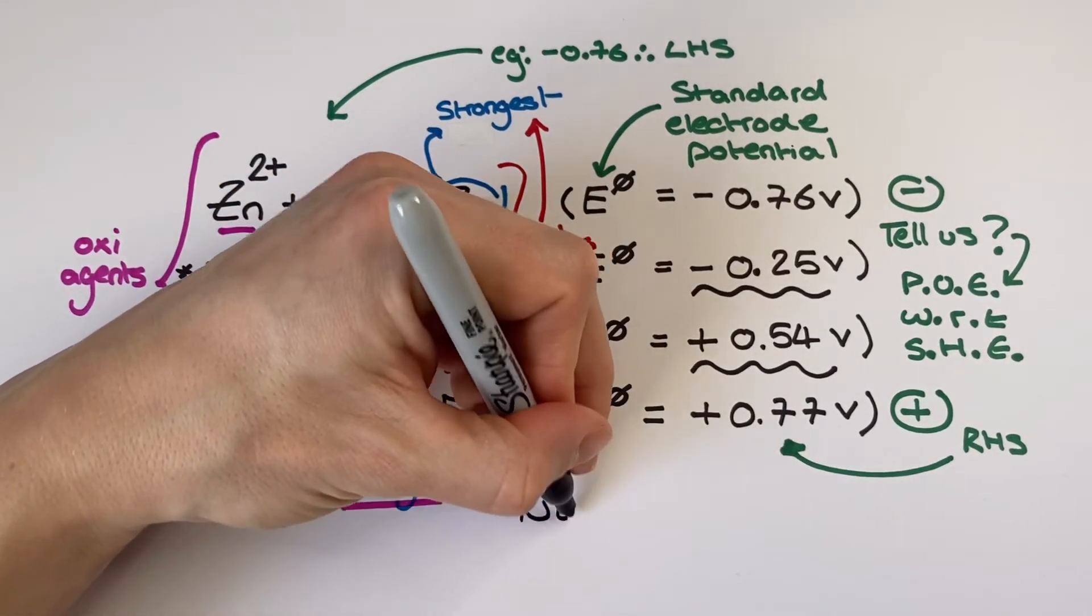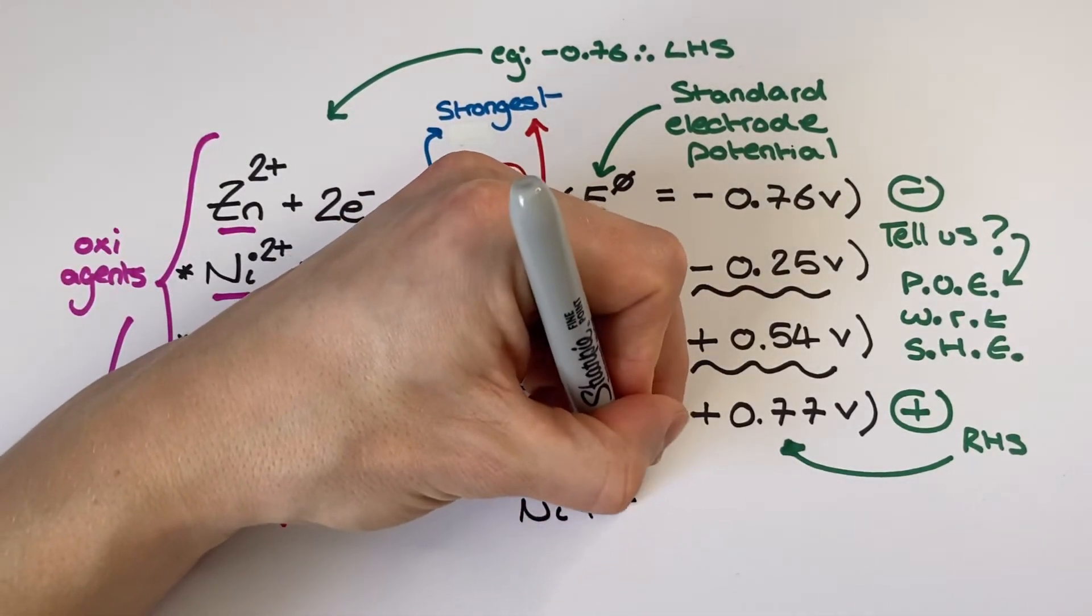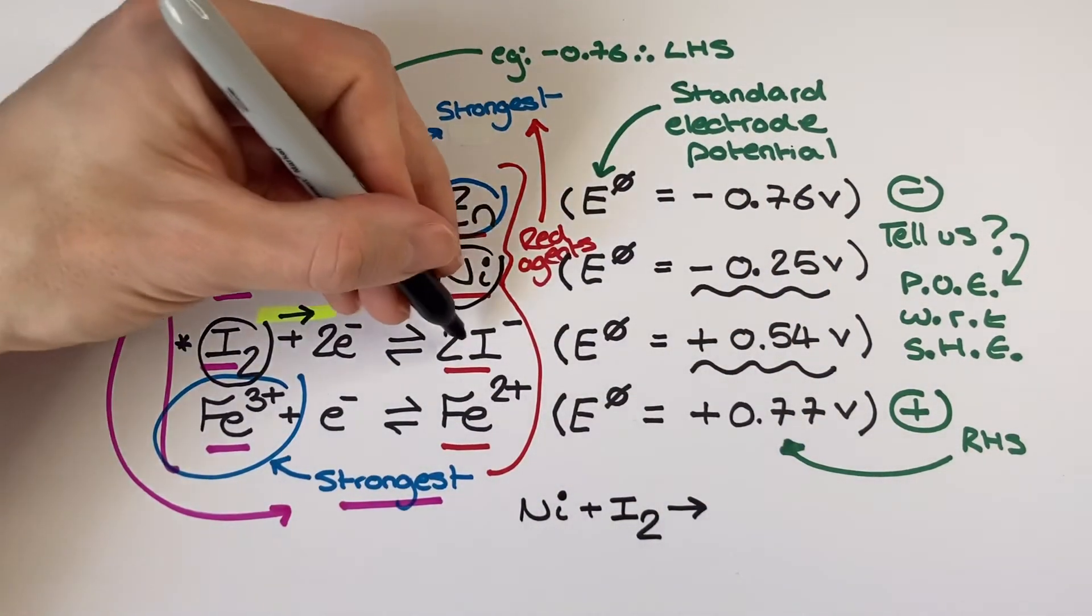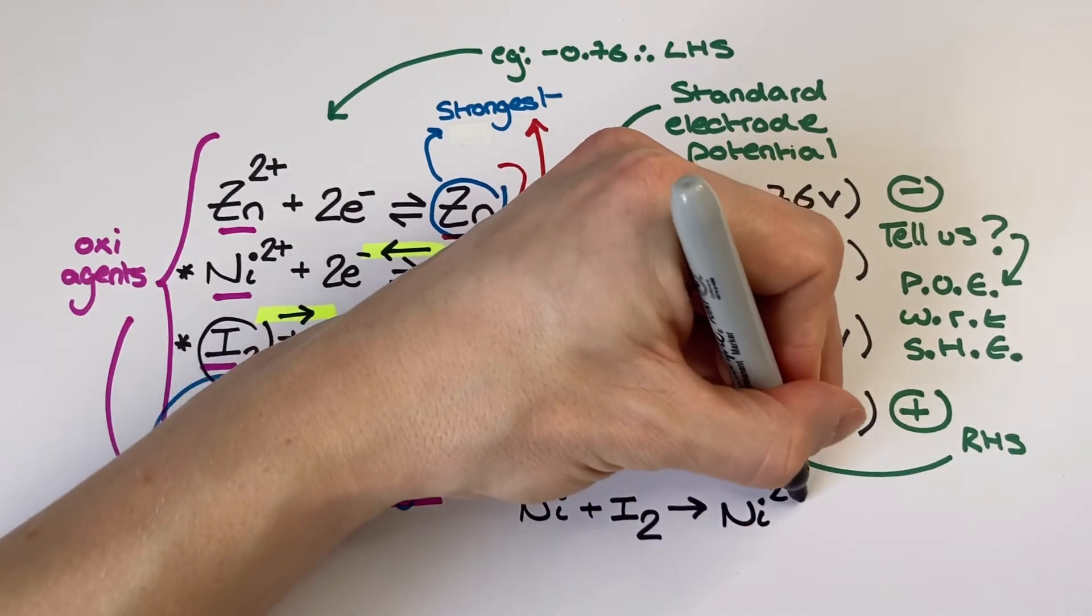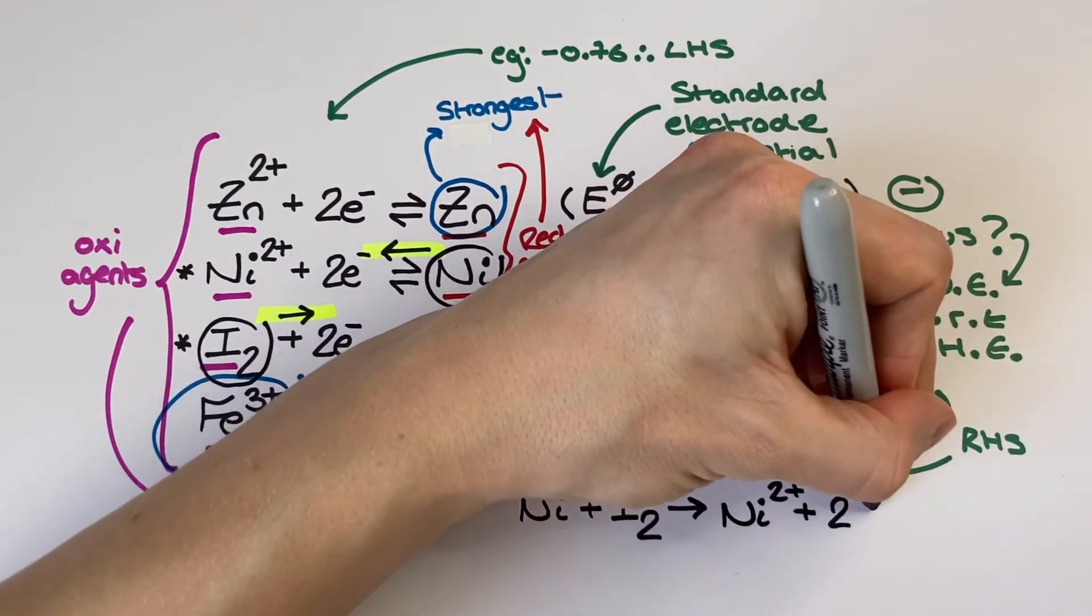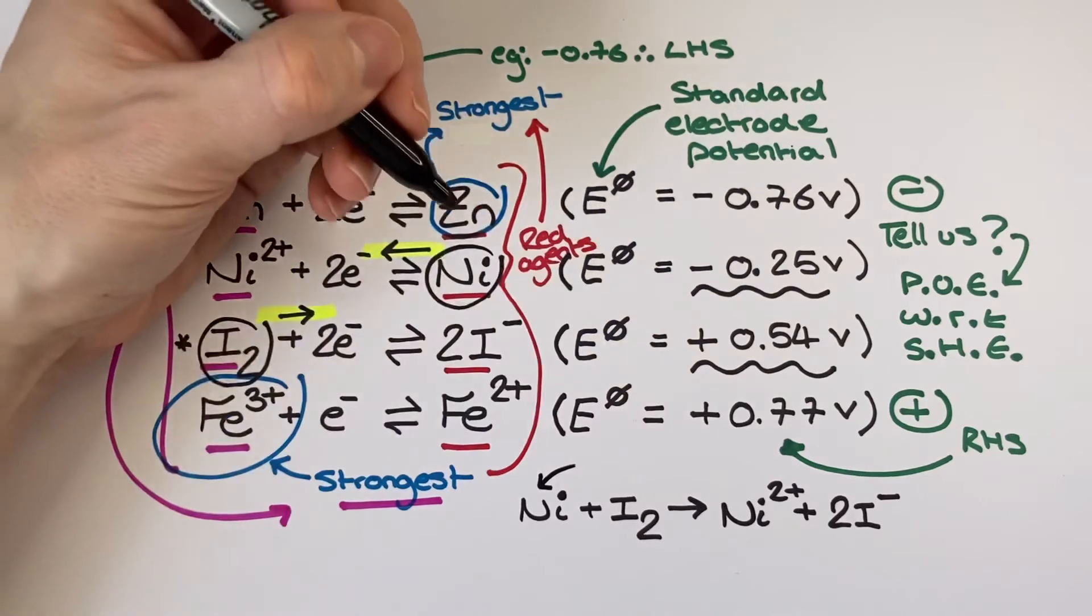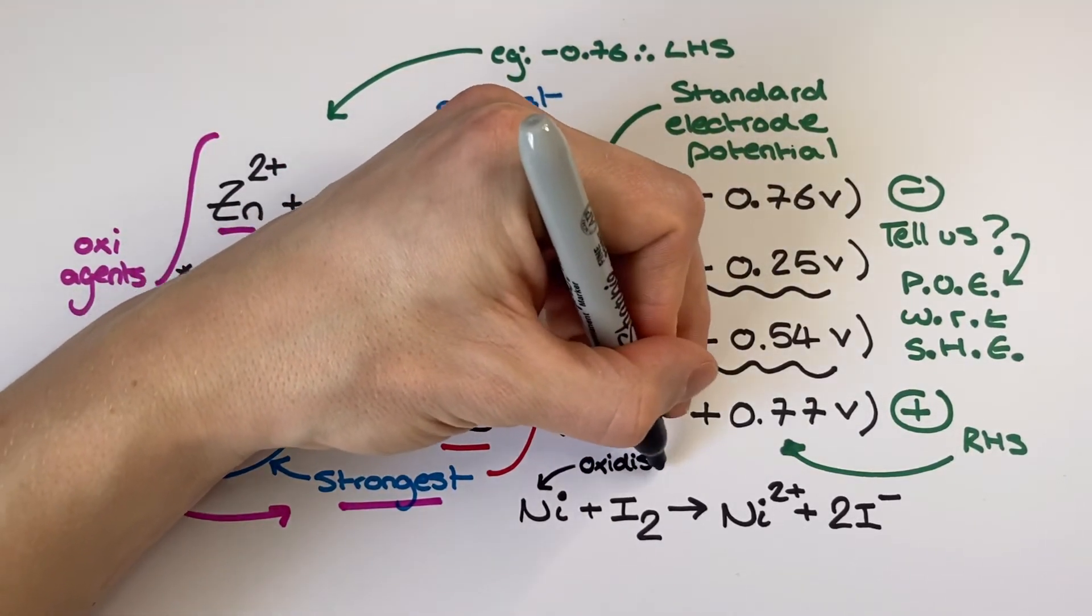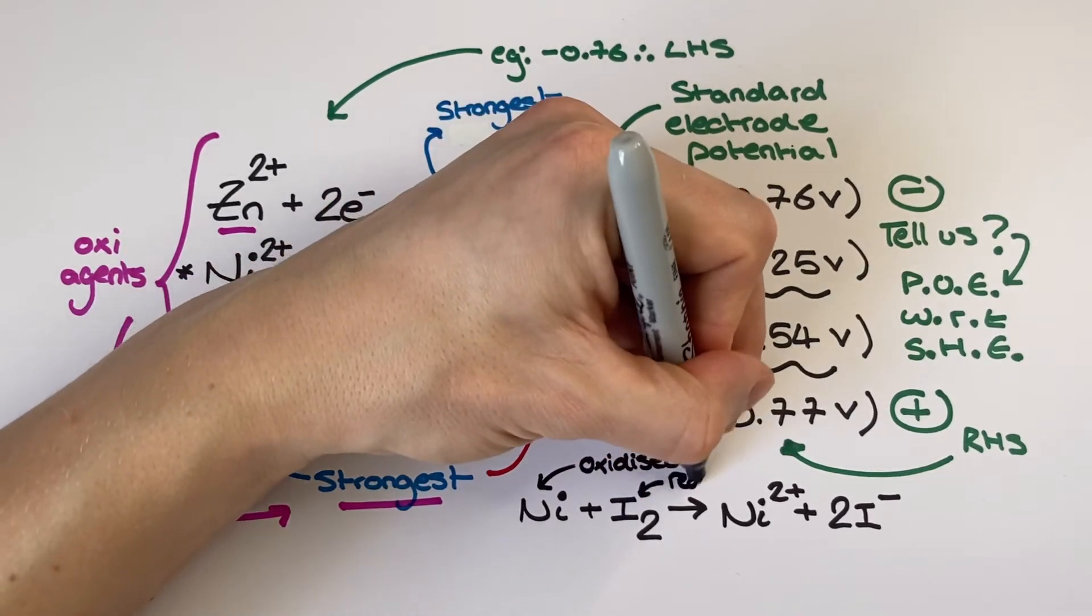So that means the nickel goes from 0 to plus 2 and the iodine goes from 0 to minus 1. So I have an oxidation and a reduction which means I can write a redox reaction. So by using the electrochemical series and the standard electrode potential values I've determined that my reactants in the overall equation for that redox reaction would be nickel and iodine. And when I write the reaction in this direction I've written it in its feasible direction.